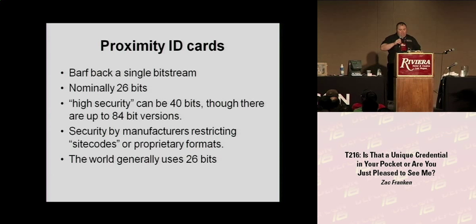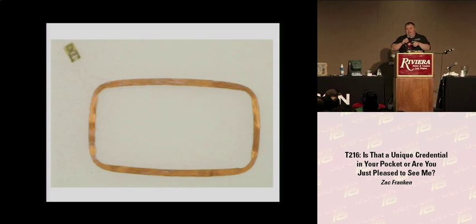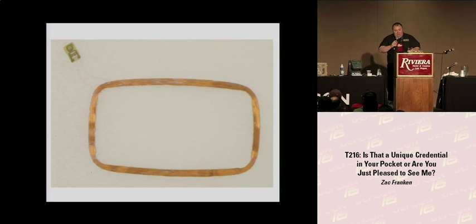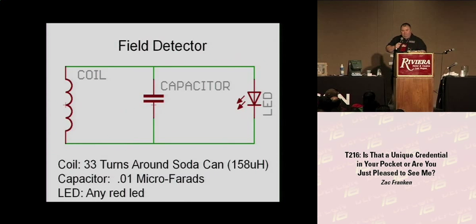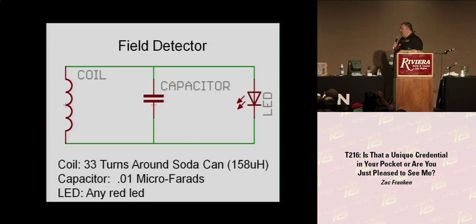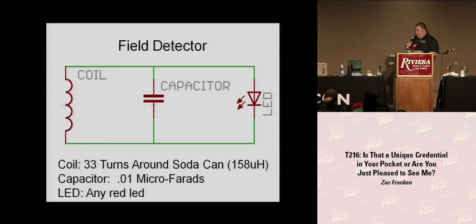This is what happens when you undress a proximity card - in this case dipped in chloroform, though you can do it with acetone. Finding concealed detectors is dead simple. It has three components: a simple coil of 33 turns around a regular soda can, a 0.1 microfarad capacitor, and any red LED - red because it tends to be driven with a lower voltage. You can spot lit-up detectors even when they're concealed behind walls.